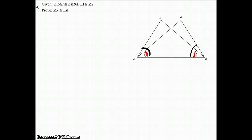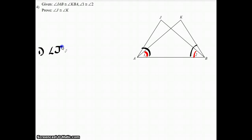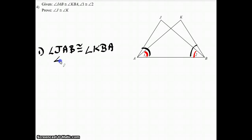The first thing I'm going to do is copy over everything we see given. So I'll write that angle JAB is congruent to angle KBA, and also that angle one is congruent to angle two, and the reason for that is it's given.